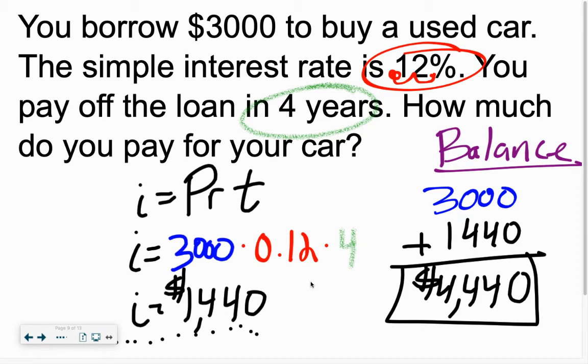Wait, the car costs $3,000, but you only pay this much money? No. What they're asking for is the balance. They're asking what's the balance, which means you're going to take the principal, the amount of money it started, plus the interest. So though that car in the car lot said it was a $3,000 car, by the time you're done paying off the loan, that car actually costs you $4,440. It costs more than it did at the car lot. That's what happens when you borrow money.